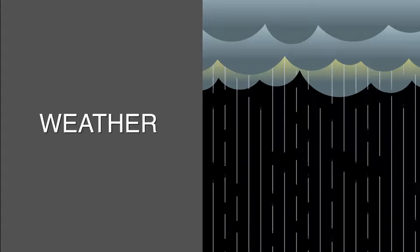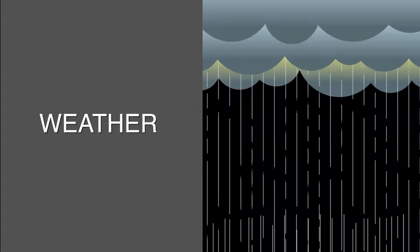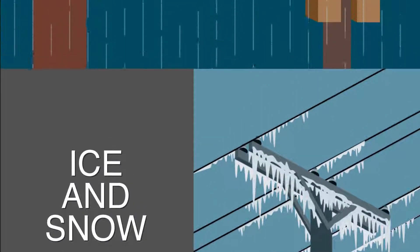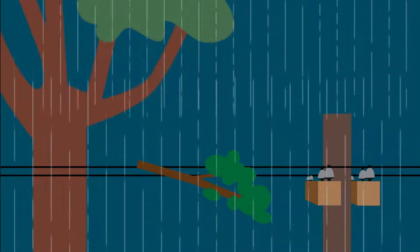Mother Nature can be a tough opponent. Severe weather like thunderstorms, tornadoes, and hurricanes, and the accumulation of ice and snow can cause tree limbs to fall on power lines, resulting in an outage.